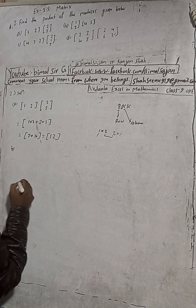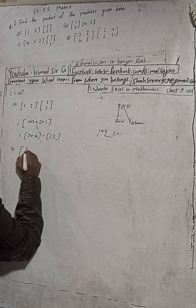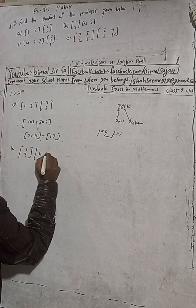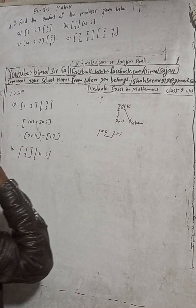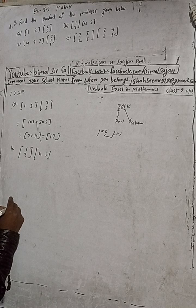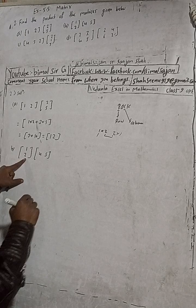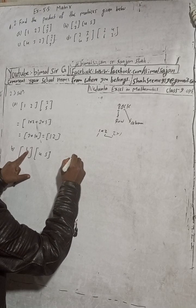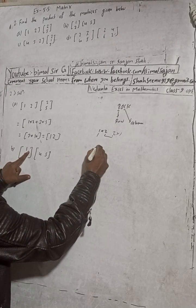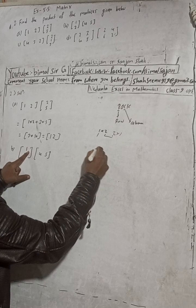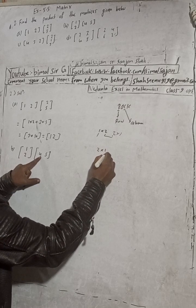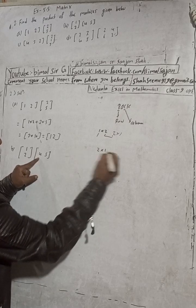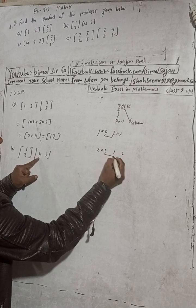Here we have: how many rows? Two rows and one column. And here: one row and two columns. So the result is a 2 into 2 matrix.